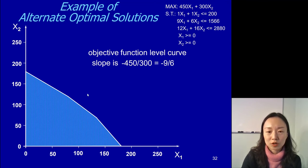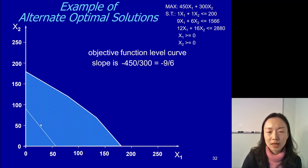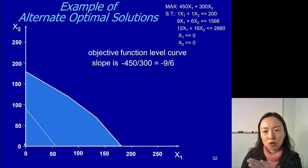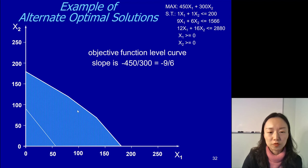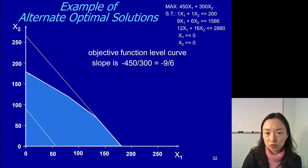With this slope, we can draw the level curves. For example, we can find a point like (45, 30) or multiply by two to get (90, 60), and draw those level curves. Because this is a maximization problem, we want to maximize the intercept on the x2 axis, so we push the level curve outwards. The gradient vector is positive for the objective function, so we move in the gradient vector direction until the level curve touches the edge or corner point of the feasible region. If you draw it to scale, you'll find that this level curve, when it reaches the corner point area, overlaps with this edge here.